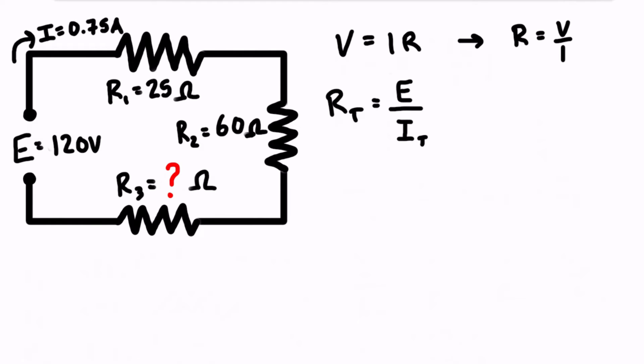Alright so this is going to be equal to our source voltage 120 volts divided by 0.75 amps and we find that the total resistance is equal to 160 ohms.